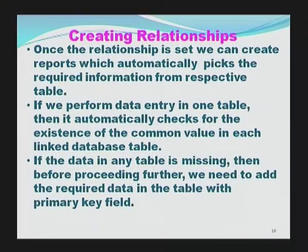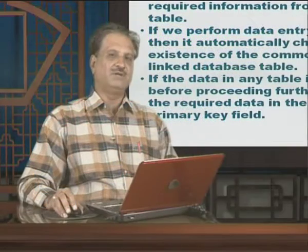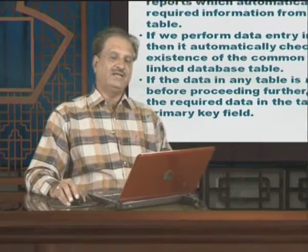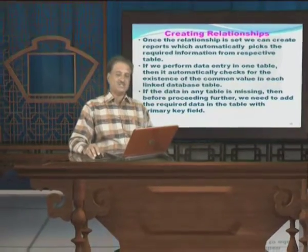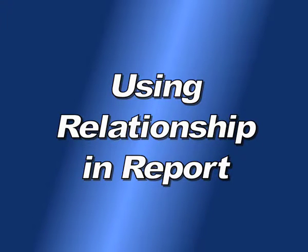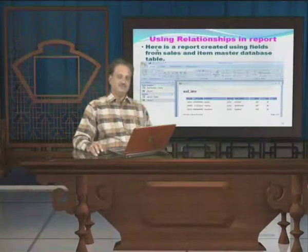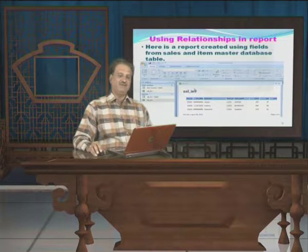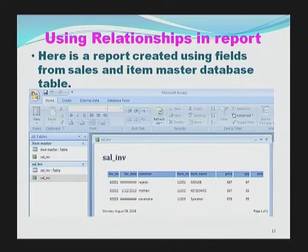If the data in any table is missing, then before proceeding further, we need to add the required data in the table with the primary key field. As already shown, the Item Master table has Item Number as the primary key. Therefore, if I want to add any data in Sales Invoice, it must be available in Item Master. Here is a particular report based on the relationship between Sales Invoice and Item Master.